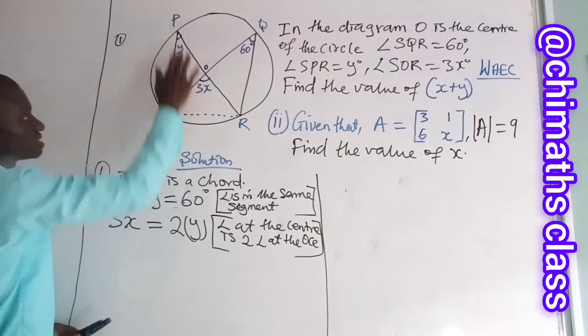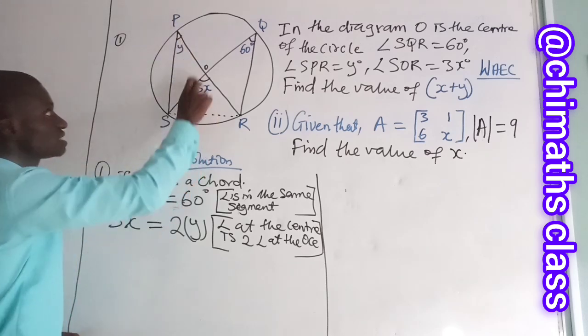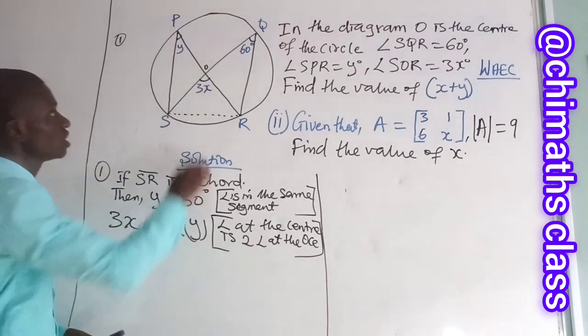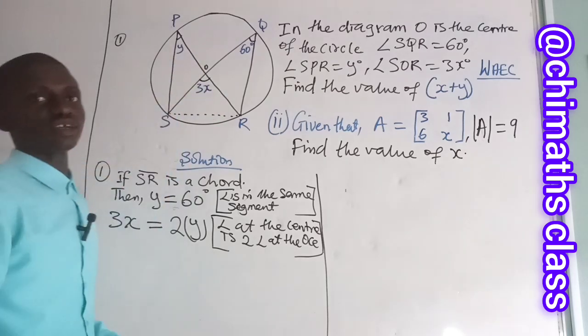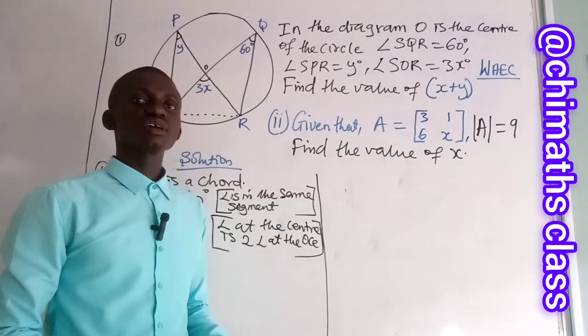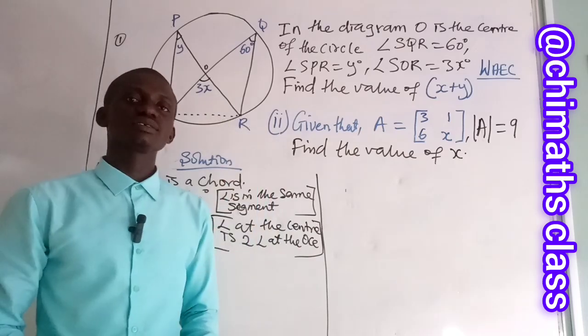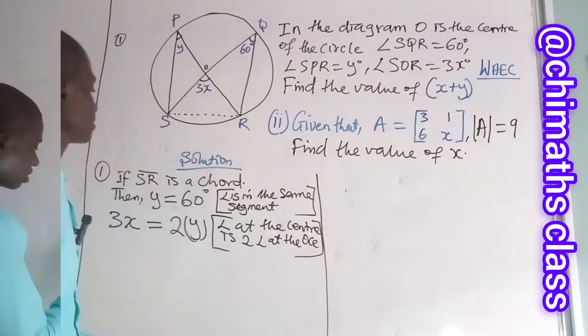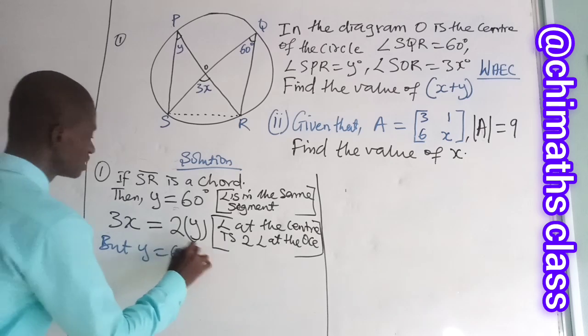So this is an angle at the circumference, and this is an angle at the center. Since O is the center of the circle, so 3X is 2 of the angle at the circumference. And the angle at the circumference is Y, which is 60 degrees. Y equals 60 degrees.